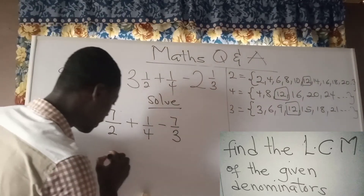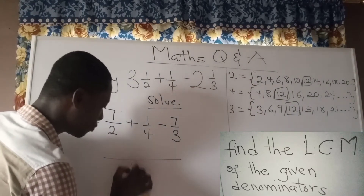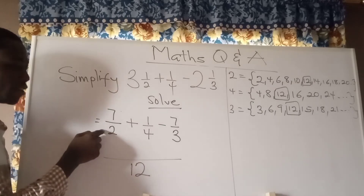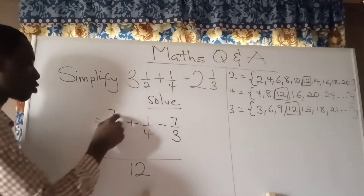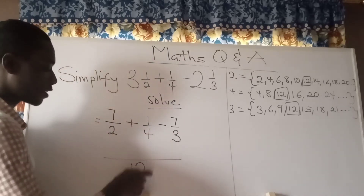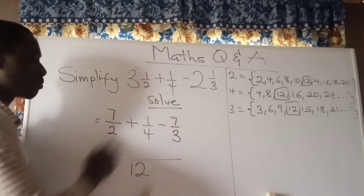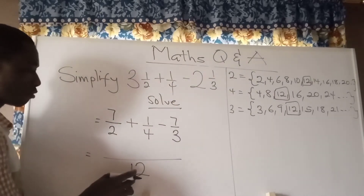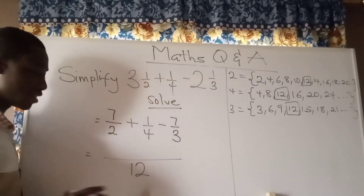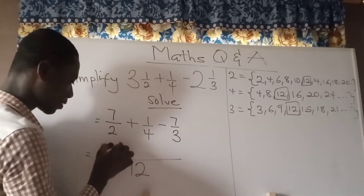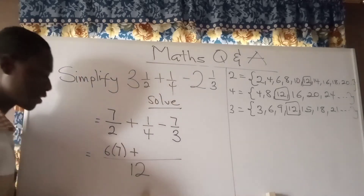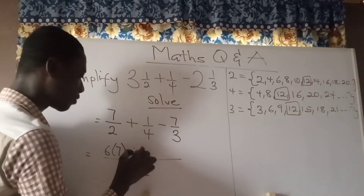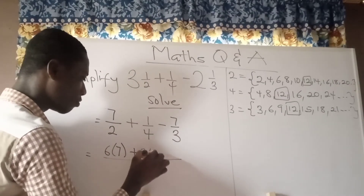We use 12 as our main denominator. Now divide the LCM by each denominator and multiply the result by the numerator. 12 divided by 2 gives 6; multiply 6 by the numerator 7. Then 12 divided by 4 gives 3; multiply 3 by the numerator 1. Then 12 divided by 3 gives 4; multiply 4 by the numerator 7.